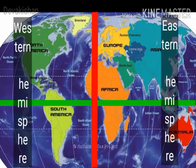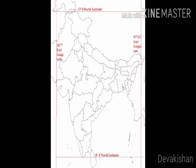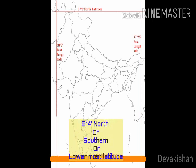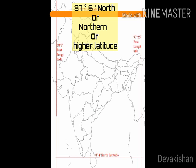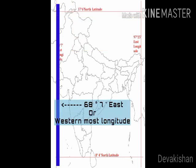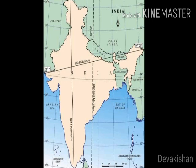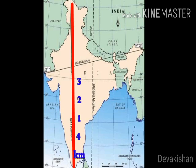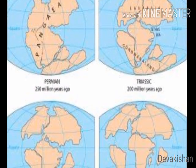India is in the northern hemisphere by latitudes and eastern hemisphere by longitudes. India is situated between 8 degrees 44 minutes north latitude to 37 degrees 6 minutes north latitude, and 68 degrees 7 minutes east longitude to 97 degrees 25 minutes east longitude. The distance from the northernmost to southernmost point is 3,214 kilometers, and from west to east it is 2,933 kilometers.